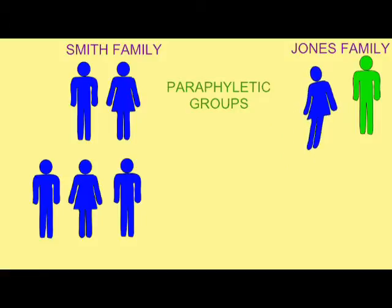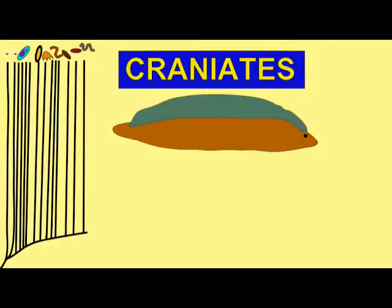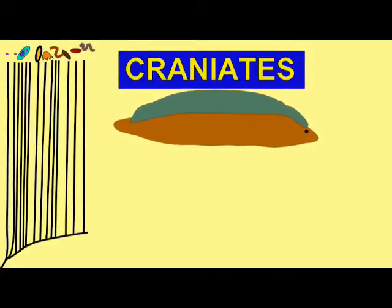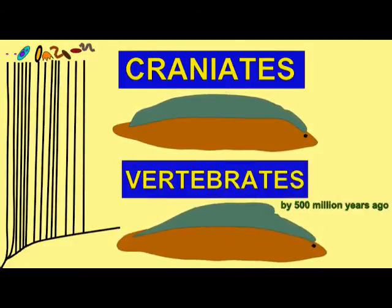Thus, in biological terms, the word Smith includes some of the descendants of a common ancestor, but not all, since some are no longer included in the family Smith. In biological terms, this is known as a paraphyletic group, which includes some, but not all, of the descendants of a common ancestor.